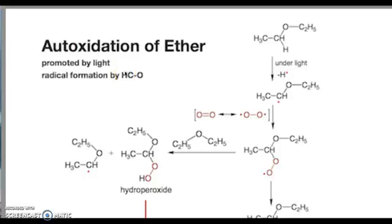Ether can undergo auto-oxidation in the presence of light and oxygen. Here is the structure of ether. In the presence of light and a radical source, you will abstract a hydrogen from the alpha carbon.